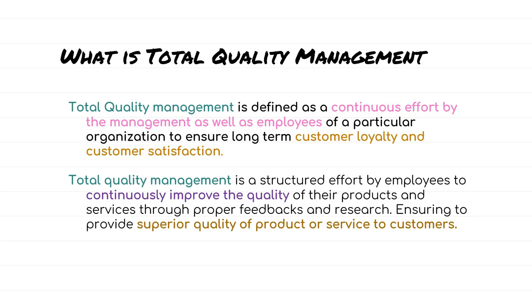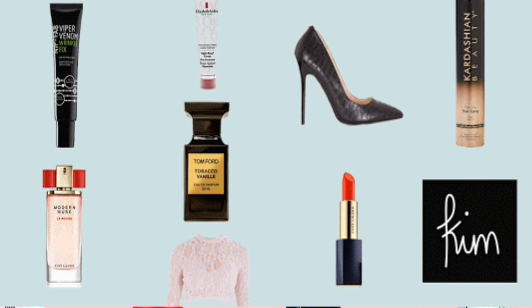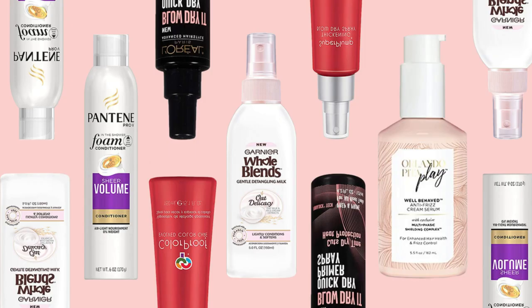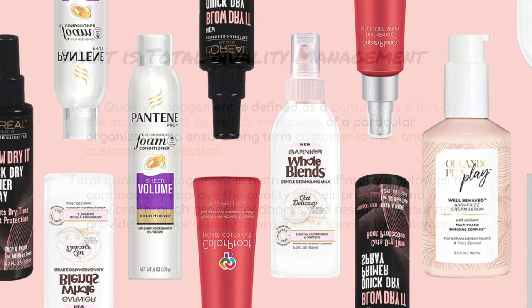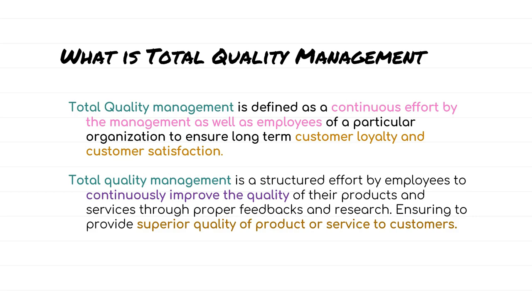Quality of a product can be measured in terms of its durability, reliability, uses, and so on. Total Quality Management is a structured effort by employees to continuously improve the quality of their products and services through proper feedbacks and research. Ensuring superior quality of a product or service is not the responsibility of a single member.